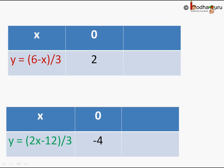For the first equation y equal to 6 minus x by 3, when x equal to 0, y is equal to 6 minus 0 by 3, which is 6 by 3, which is equal to 2. We got one point.